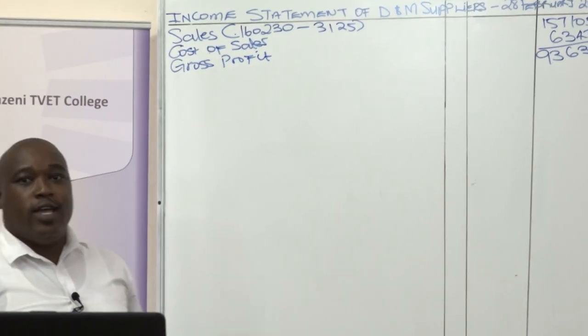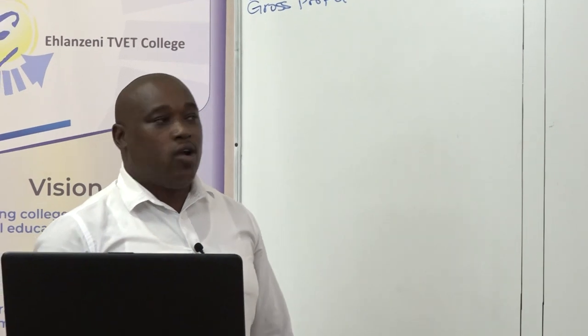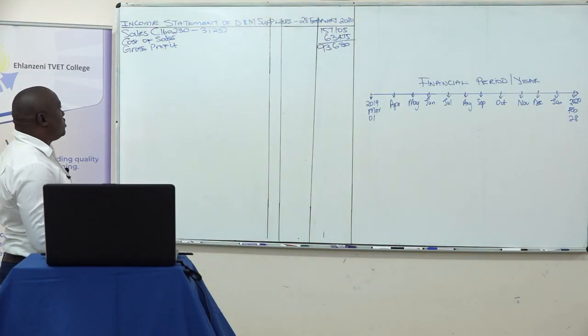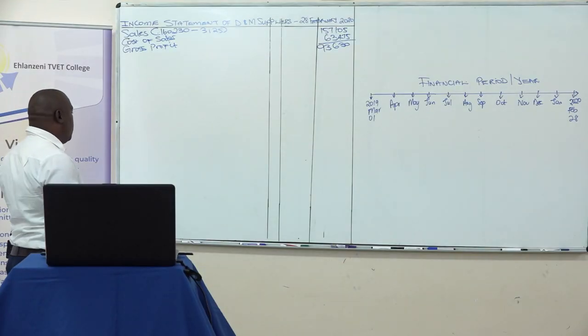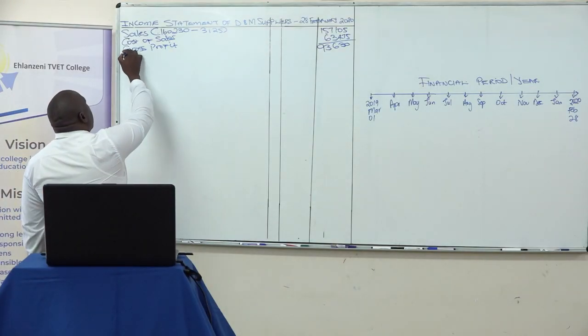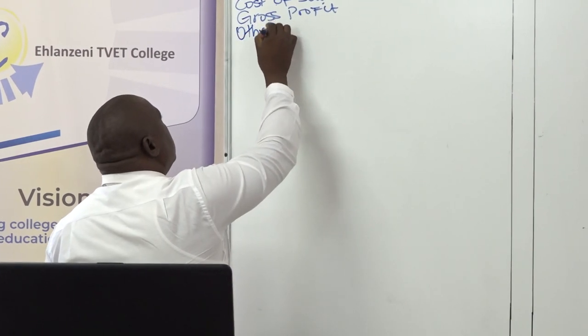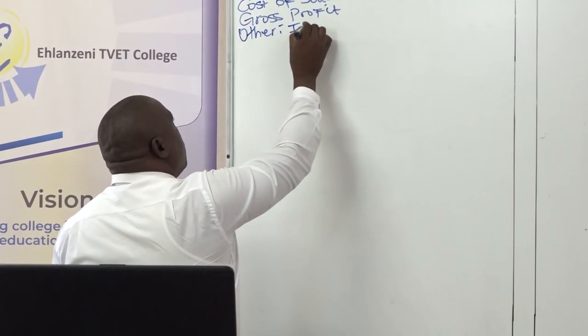Here in Level 4 we don't work on gross loss when doing the income statement — we always work on gross profit. From there, we add other income.